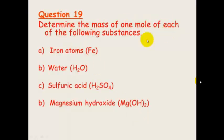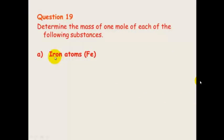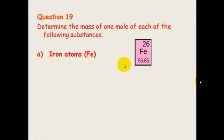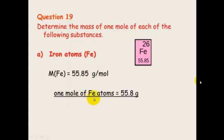Question 19: Determine the mass of 1 mole of each of the following substances — iron atoms, water, sulfuric acid, and magnesium hydroxide. Pause the video and have a go. The mass of 1 mole of iron equals its molar mass. Looking at the periodic table, iron has a relative atomic mass of 55.85. So the molar mass equals 55.85 g mol⁻¹. Remember your units. One mole of iron weighs 55.85 grams.